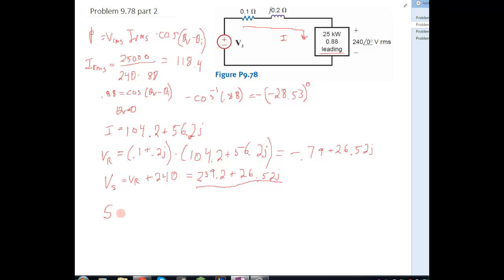Now we're going to calculate the complex power. So complex power S is equal to V times I conjugate. So we have our voltage, and I conjugate is our current here. Put the minus sign and make it conjugate, so 104.2 minus 56.2J. And this is going to come out to a big number. That's our second answer.